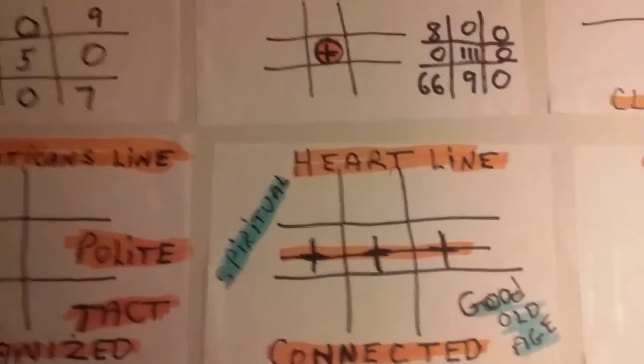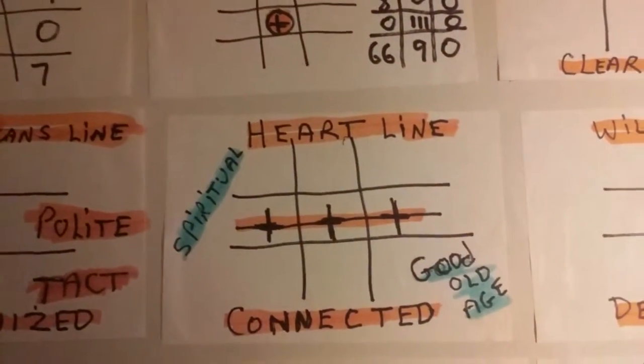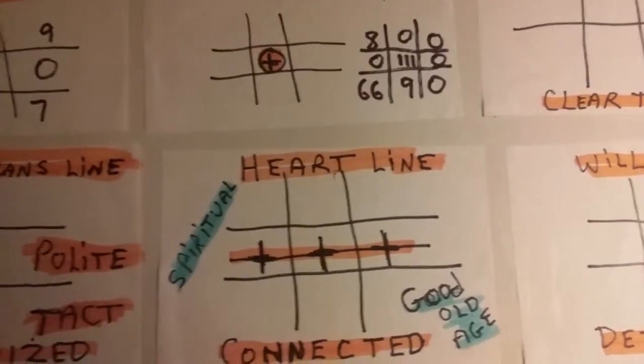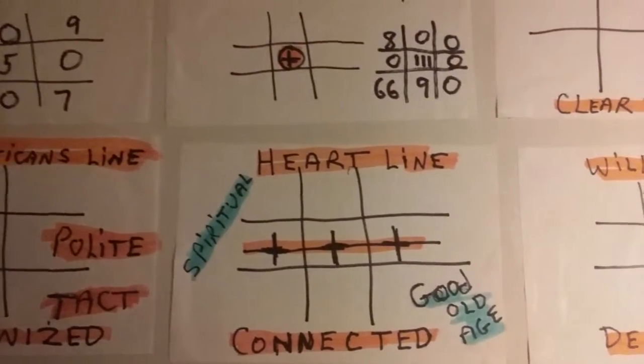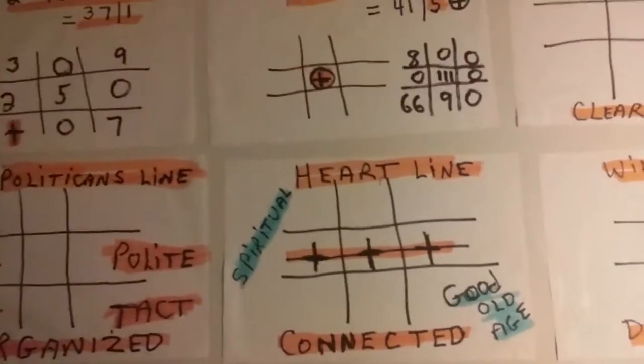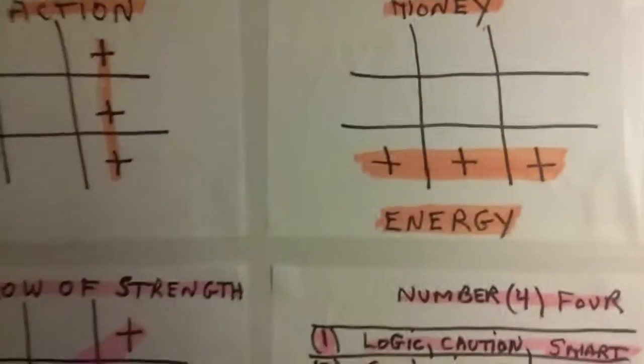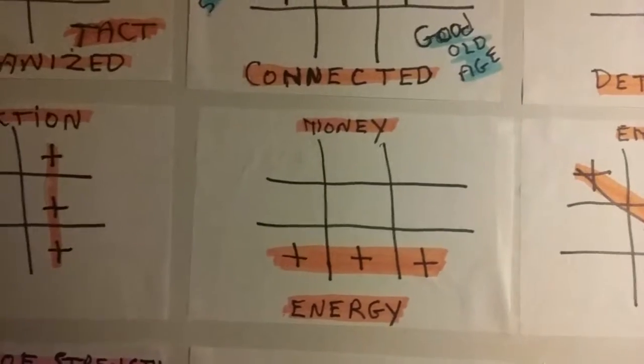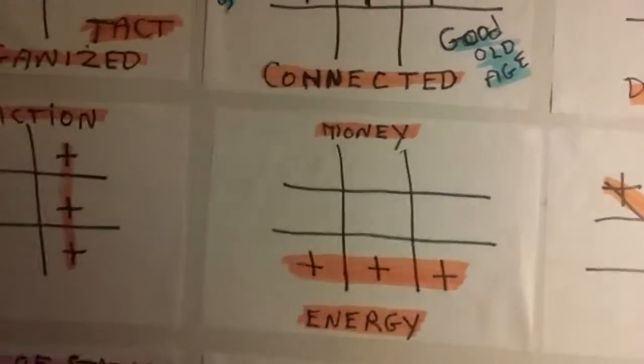It shows the heart line going straight across in the middle. When that's full, somebody feels connected and usually they have a pretty good old age. They're very spiritual. Money tends to come to those with the bottom full line, as well as health and energy.